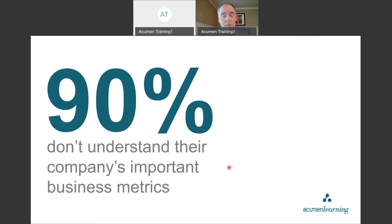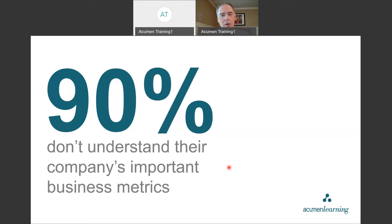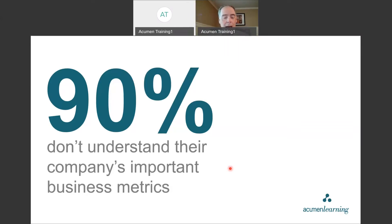The framework we're going to give you today focuses on five business drivers that we believe all successful companies focus on: cash, profit, assets, growth, and people. When you narrow it down to those five and look at financial statements through their lens, it makes a real difference — maybe two, three, or four metrics in each driver. We're going to see how Zoom relates to those five drivers.